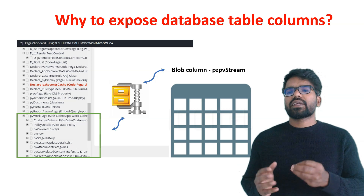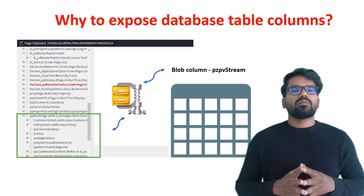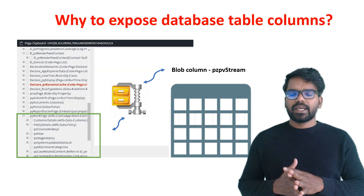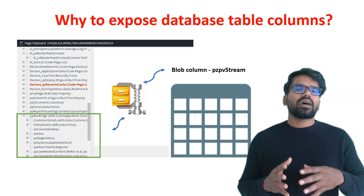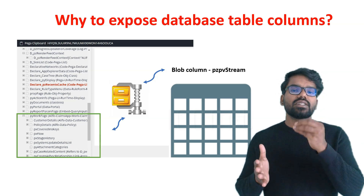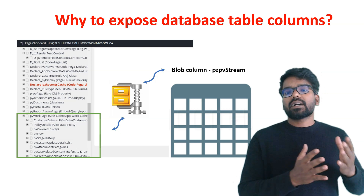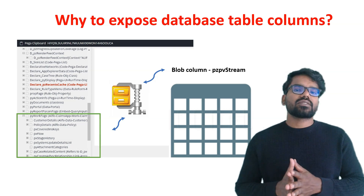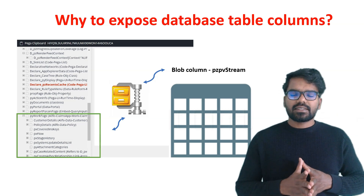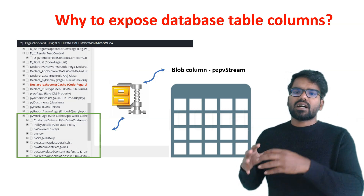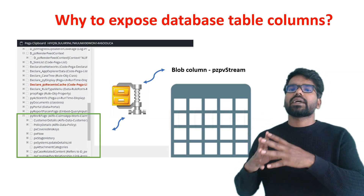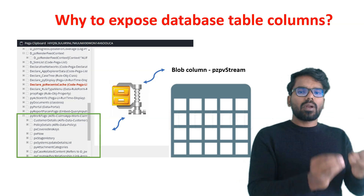Not all properties are exposed into the database table. Most likely, top level properties which are directly on the pyWork page can be easily exposed, while all other embedded data are not exposed. However, those are saved as an instance into the database table via a blob. Blob stands for binary large object. All these case details are compressed and then saved into the blob column during an update.